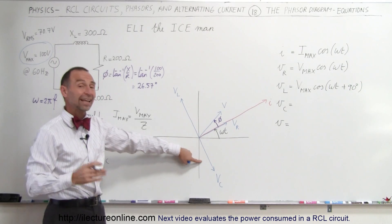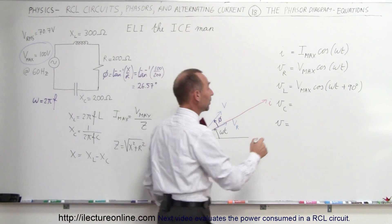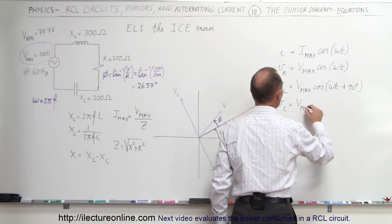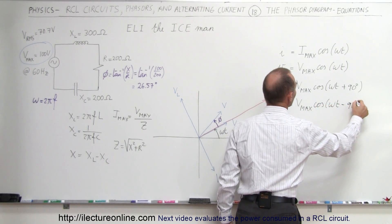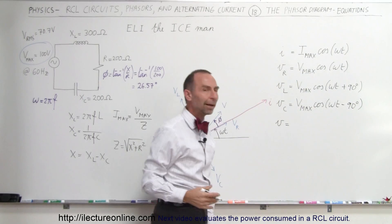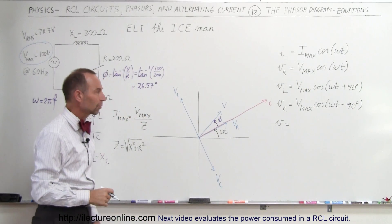How about the capacitor? Well, since it's 90 degrees behind in phase, that becomes V max times the cosine of omega T minus 90 degrees because it lags by 90 degrees compared to the voltage across the resistor.